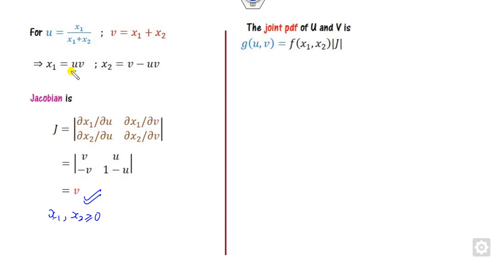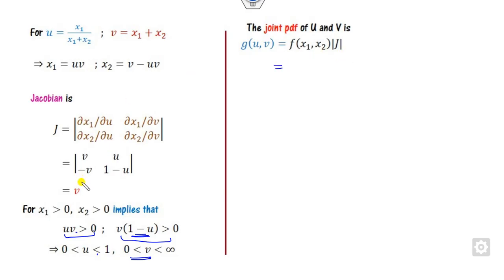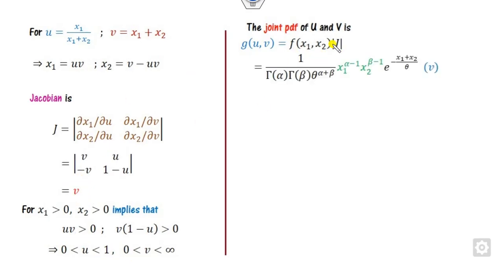Since x1 and x2 are both greater than or equal to zero, the meaning of x1 > 0 is that uv > 0, and x2 > 0 means u > 0 and v > 0. From the constraint, you can also see that v/u must be less than 1, otherwise x2 would be negative. So that defines the domain.